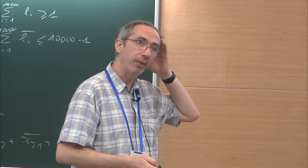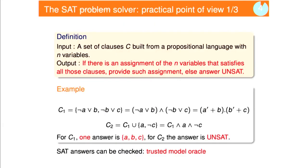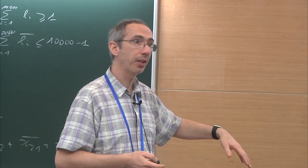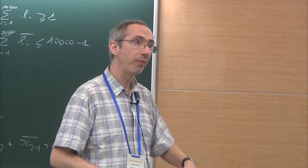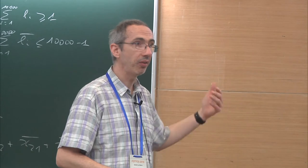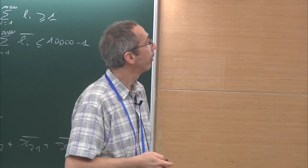That was the SAT solvers of the 90s. Since 2013, if you answer UNSAT, you can also provide a proof. You can have a proof on the side that a third party can check. It means you can check the SAT answer easily, and since 2013, you have an efficient way to output a proof and a tool that will be efficient in checking that proof — the famous DRAT proof that Mate showed yesterday.